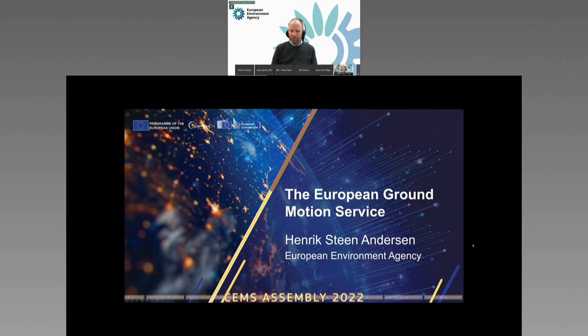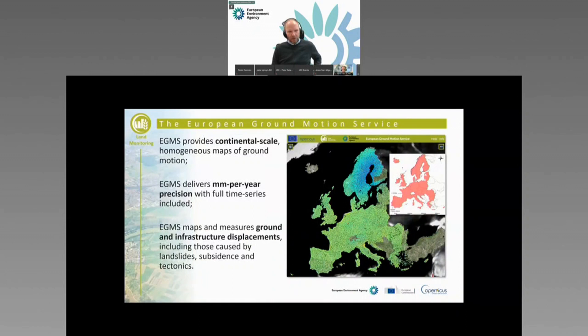Thanks for the invitation. I'm Henrik, from the European Environment Agency, and I'm responsible for the implementation of the European Ground Motion Service. What is the European Ground Motion Service? It's a continental-scale homogeneous map of ground motion — the first in the world at a continental scale. It's based on a lot of data from Sentinel-1 from Copernicus, a huge data set. It delivers millimeter-per-year precision, with full time series included. EGMS maps and measures ground infrastructure displacement, including those caused by landslides, subsidence, and tectonics. This product will be updated on an annual basis. Currently we have data from 2015 until 2020.